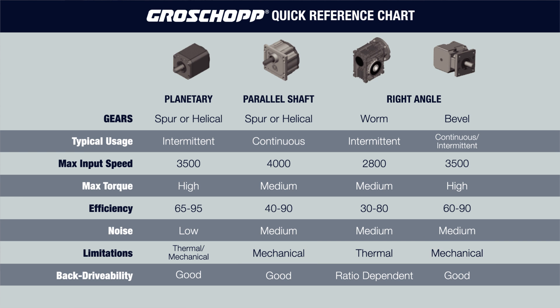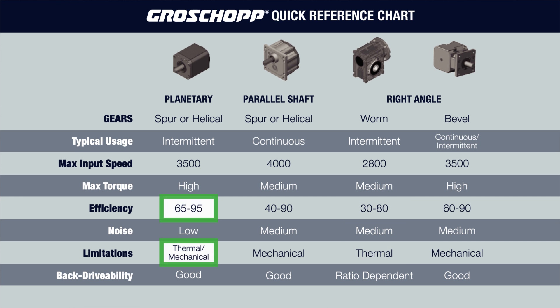On the other hand, the output torque of a worm gearbox is limited by the heat that is generated within the gearbox — a thermal limitation. If you look closely, you can see the thermal limitation is directly related to the efficiency of the reducer. Looking at the worm reducer, you can see that it has the lowest efficiency rating of all of the reducers. You likely noticed that a planetary reducer can have both thermal and mechanical limitations even though it has a high efficiency rating — we'll explain why in just a moment.